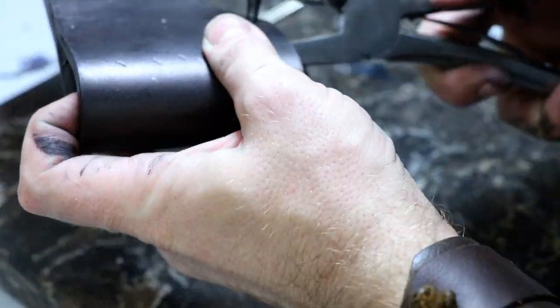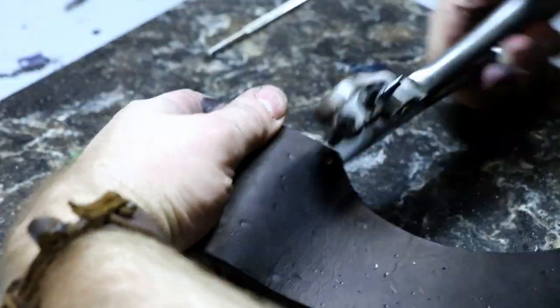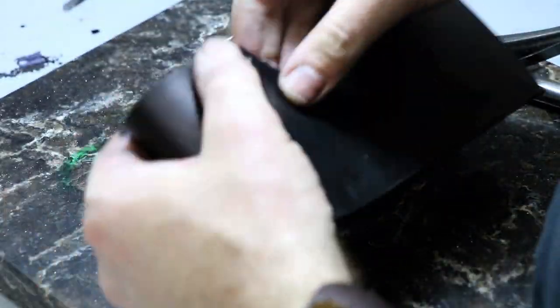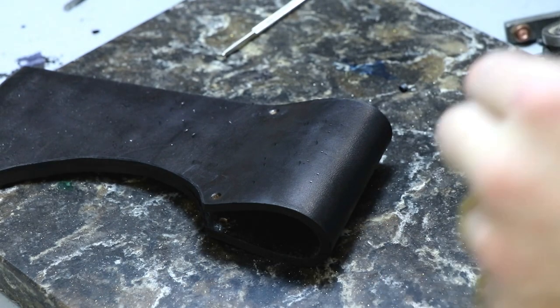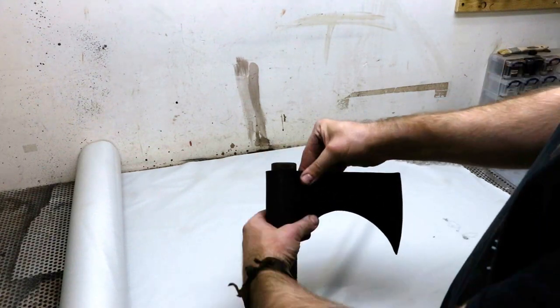Then I punch some holes in it to tie it to the wood. I saw Ross do this on a smaller axe and it looked great. I think I would conceal the lace a little better next time maybe but for now it works out okay.